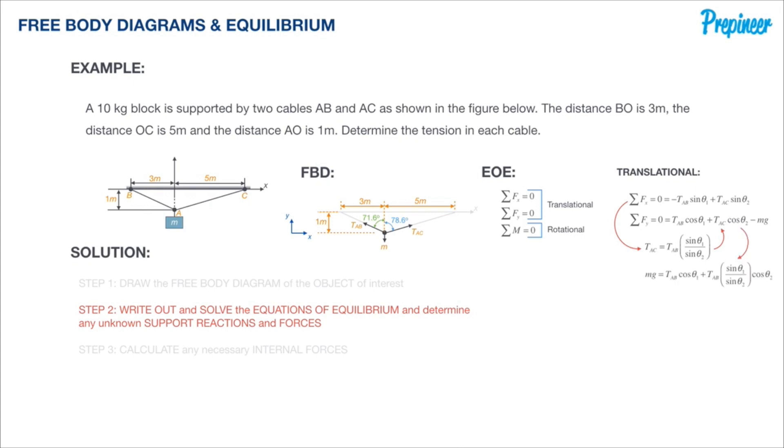I'm going to get a new equation: mg equals T_AB cosine theta 1 plus that beautiful looking second part to that equation. I did take the mg to the left side and rearranged that a little bit.